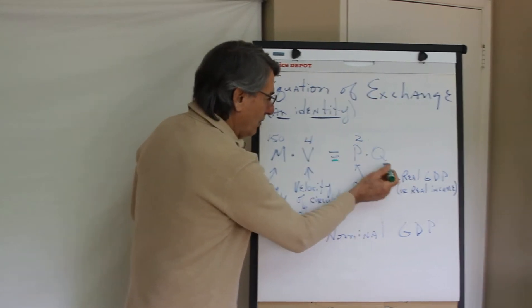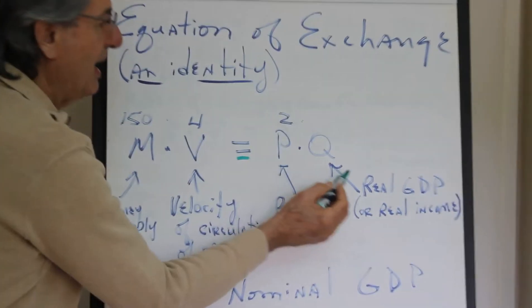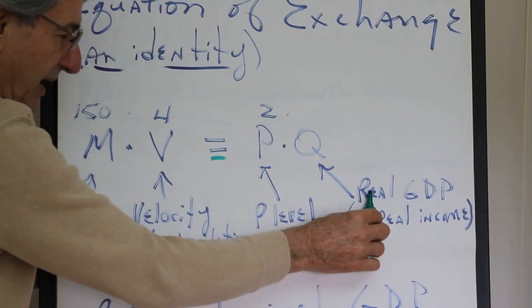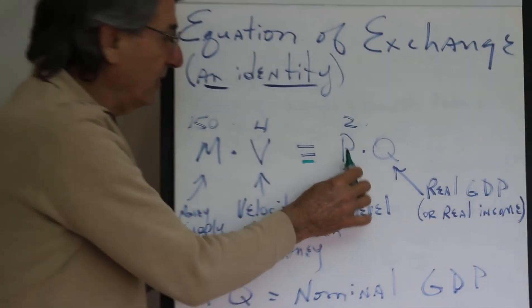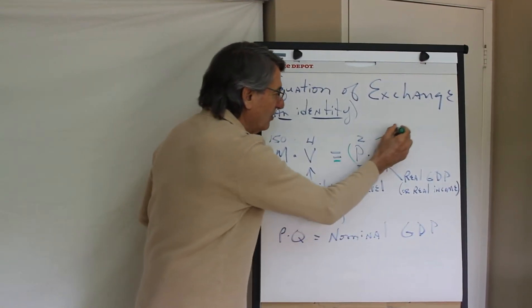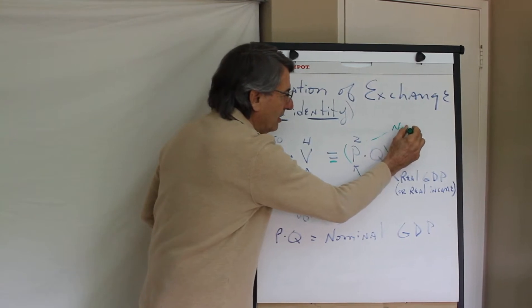P times Q is real GDP, but if you were to take real GDP, this year's GDP in real terms, and multiply it by the price level, you get nominal GDP. So P times Q is nominal GDP.